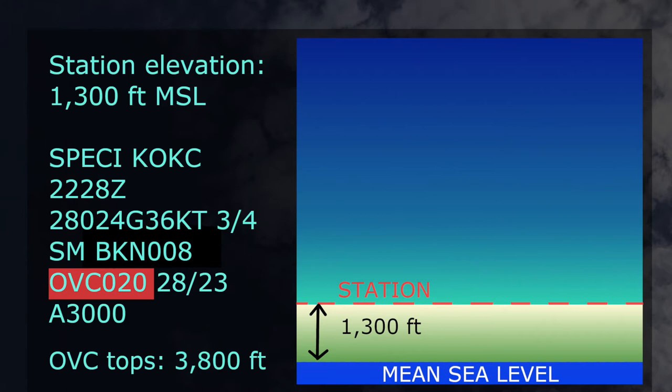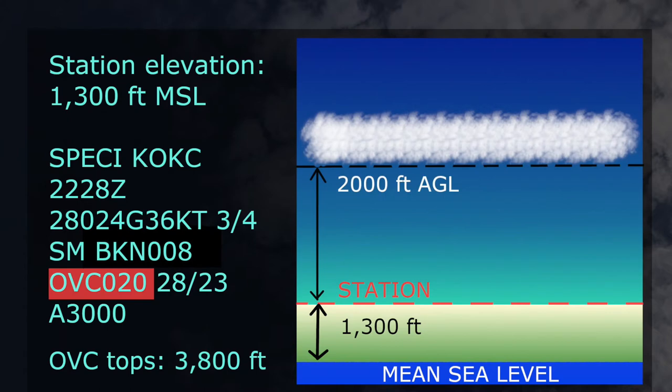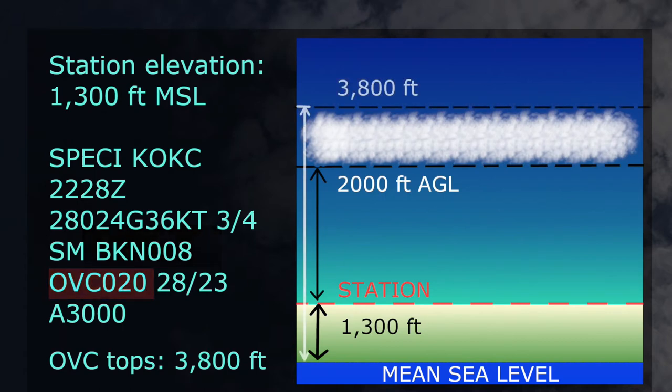Looking at the overcast height, remember these heights are given in hundreds of feet. So we simply add two zeros to the end of the digits shown, giving us a height of 2,000 feet above ground level. That is where the base of the overcast cloud layer is located.